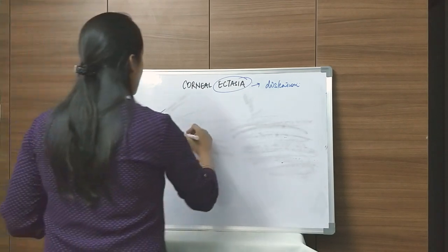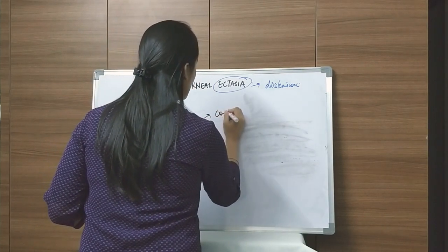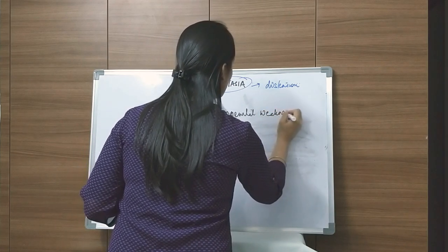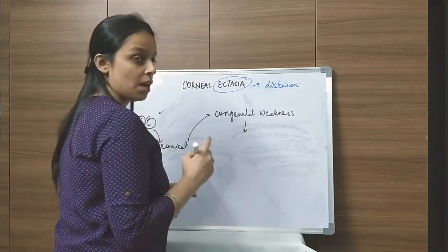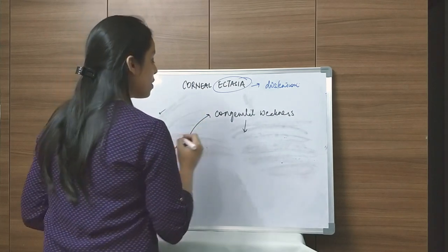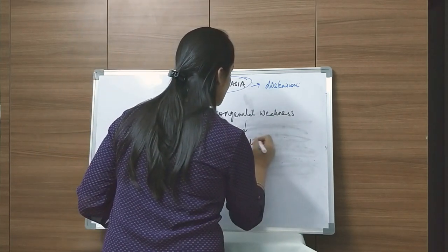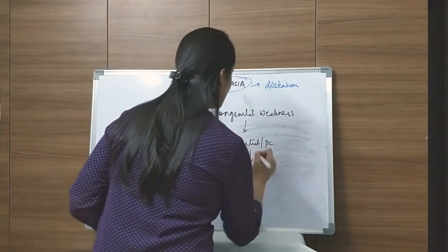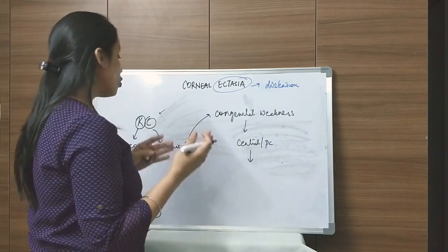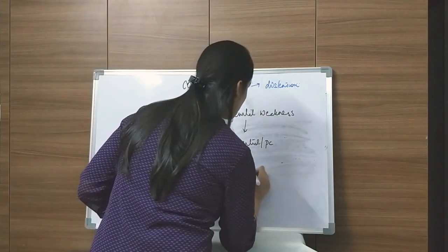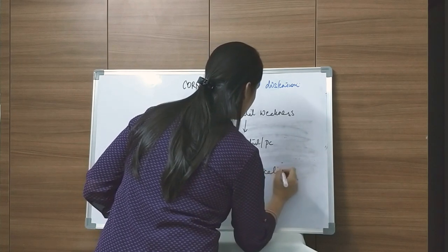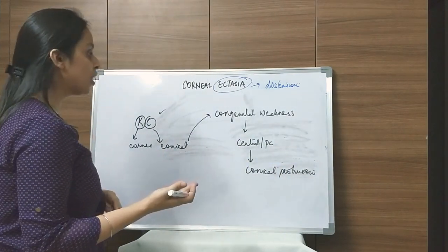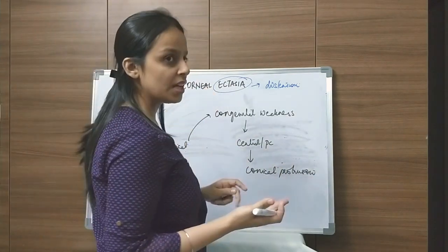So why does this happen? There is a congenital weakness of the cornea. This congenital weakness leads to thinning of the stroma, and this thinning of the corneal stroma will be either central or paracentral. Because of this, there is an apical protrusion of the cornea forming a cone — a conical protrusion — and that is why keratoconus results.